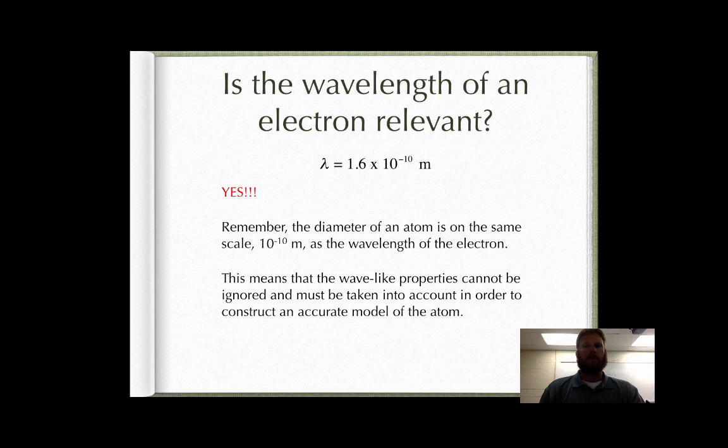All the atomic models up to this point consider electrons to be particles. To get a more accurate model, we must consider electrons as waves. This is what led us to the quantum model of the atom.